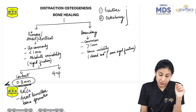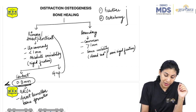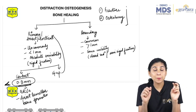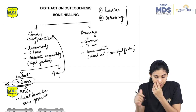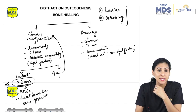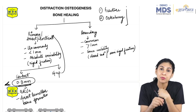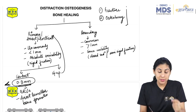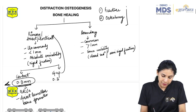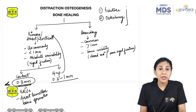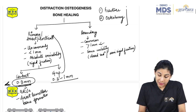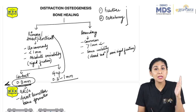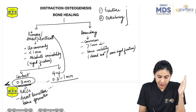Next is gap healing, which is also a type of primary healing. Do not think gap healing is secondary healing — it is still primary healing. This occurs when the gap between segments is 0.3 to 1 mm. More than 1 mm will be secondary healing. Here also, the bone must be absolutely immobile.